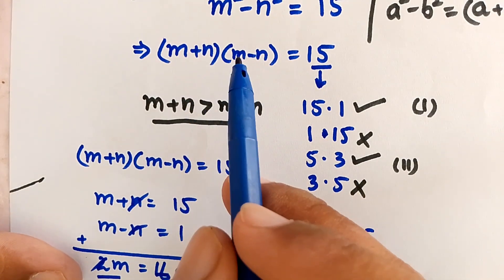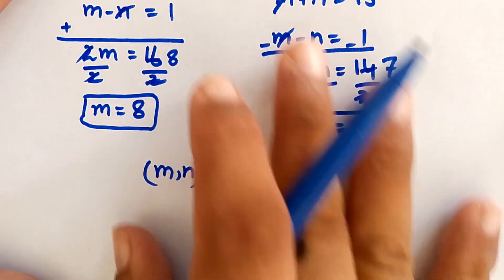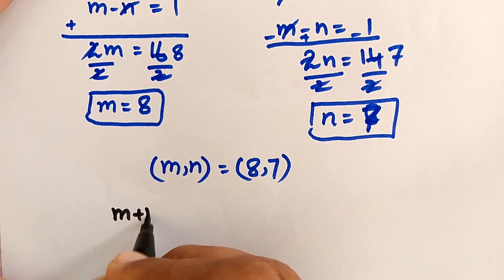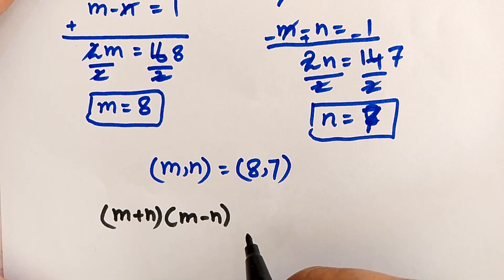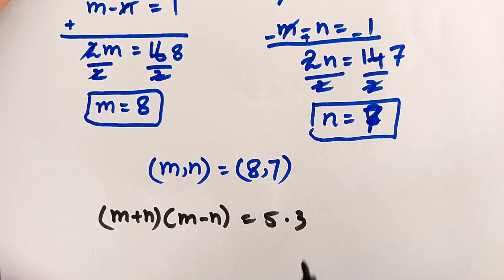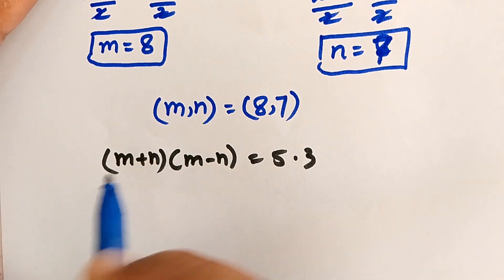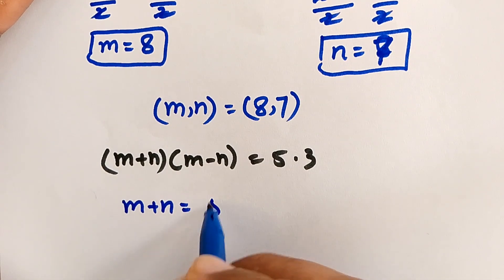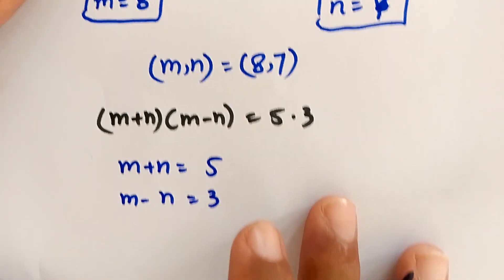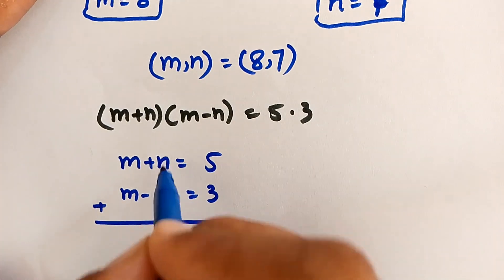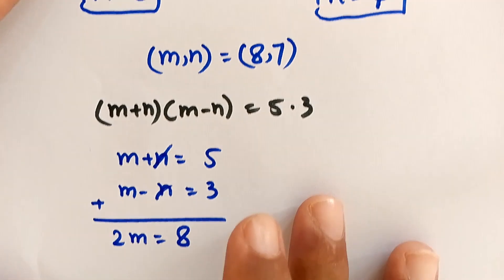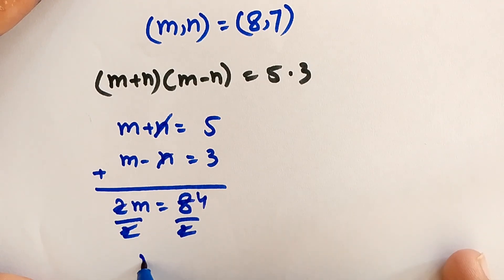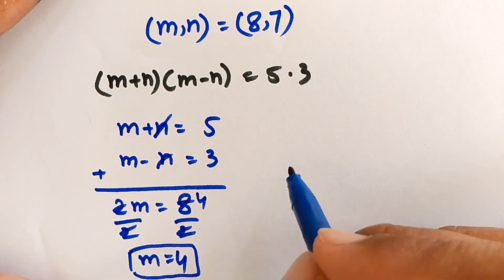For Case 2: m plus n times m minus n equals 5 times 3. This gives m plus n equals 5 and m minus n equals 3. Adding these two equations, the n terms cancel and we get 2m equals 8, so dividing by 2, m is equal to 4.